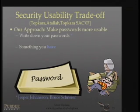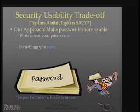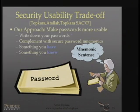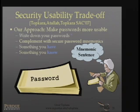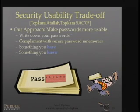Let your users write down their passwords. In this case, you will have your users write down their passwords, but the problem is that obviously, if somebody gets hold of this password, they can immediately use it and authenticate themselves as you. Our approach is to complement this piece of paper with secure password mnemonics. Rather than it being only something you know or something you have, the adversary now has to have access to something you know, which is a mnemonic sentence. So when they steal the piece of paper that has your password, they will not be able to immediately authenticate themselves.